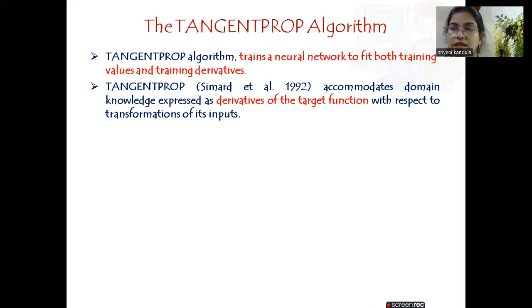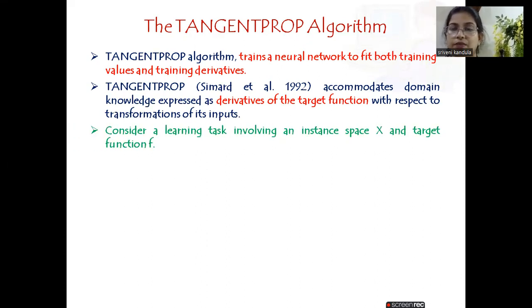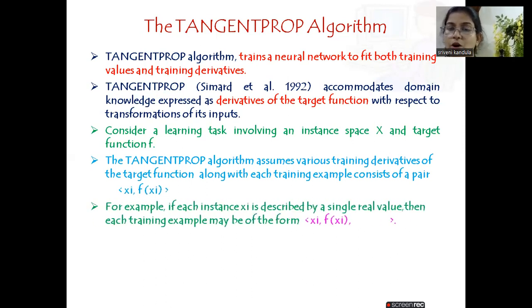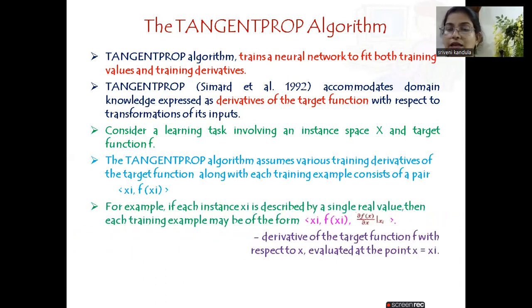Let us consider the example of a learning task involving an instance space x and target function f. We represent each example as (x_i, f(x_i)). In the Tangent Prop algorithm, along with this training value, we also add the derivative of the target function, which is ∂f(x_i)/∂x. This is how an example instance in the Tangent Prop will look.